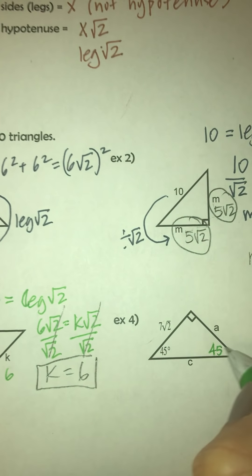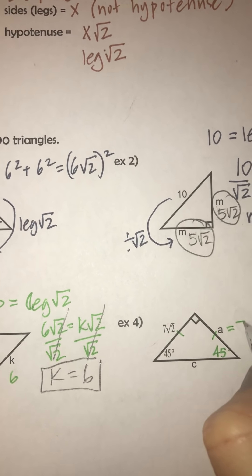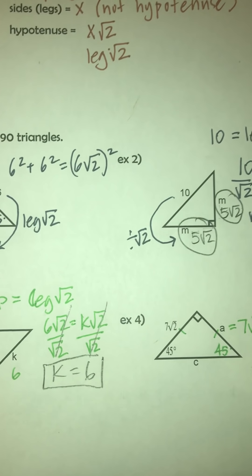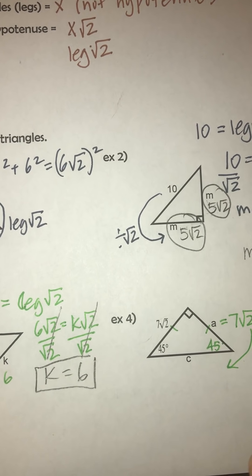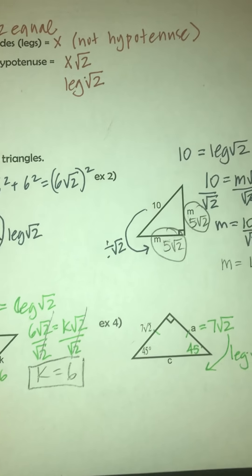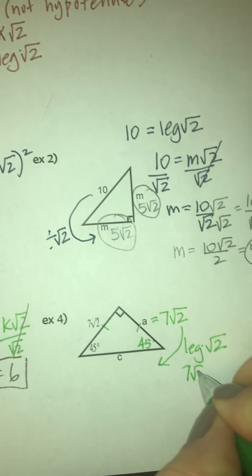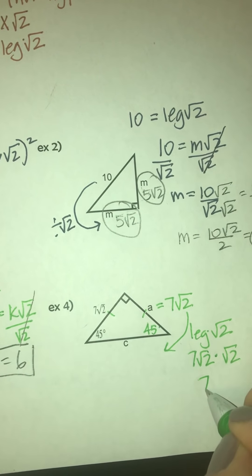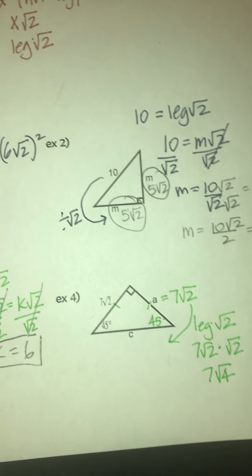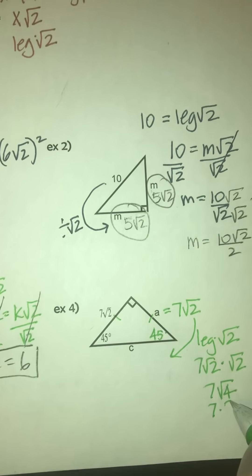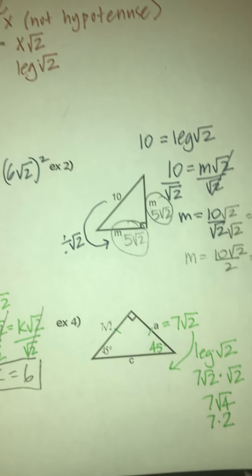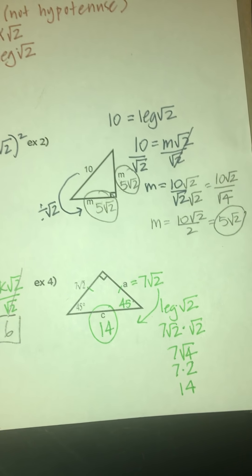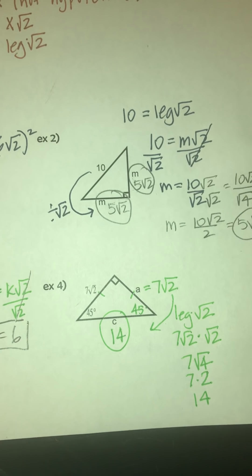Now this next one, they give us one of the legs. So we know the other leg has to be the same because this is a 45-45-90. These two have to be the same, so this has to be 7 square root of 2. Now if I know these are the legs, I take the leg and multiply it by the square root of 2 to find the hypotenuse. So I take 7 square root of 2 and multiply it by the square root of 2. That's 7 square root of 4, which equals 7 times 2, which equals 14. So c ends up being 14.